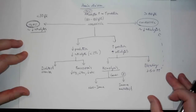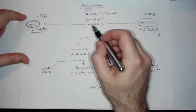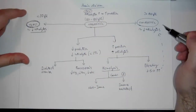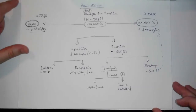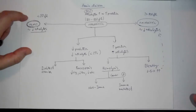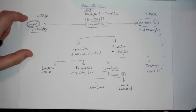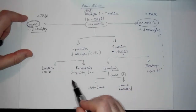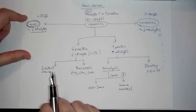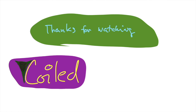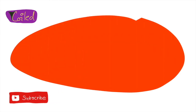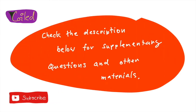So this is the main division: microcytic, normocytic, and macrocytic. We're going to go further and divide each of these in more detail — first microcytic, then macrocytic, then mainly hemolysis, and then decreased production. Thanks for watching, don't forget to subscribe and ring the bell, and check the description below for supplementary questions and other materials.